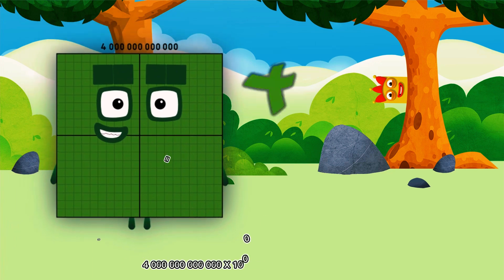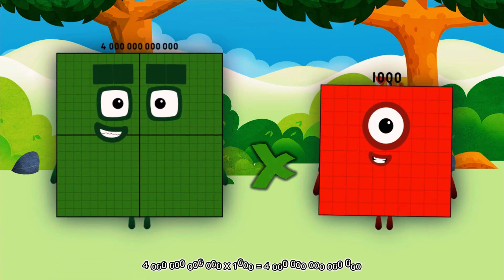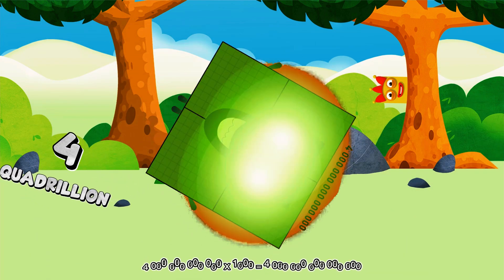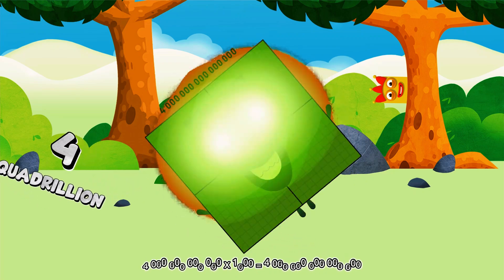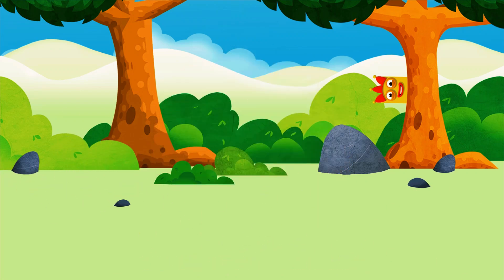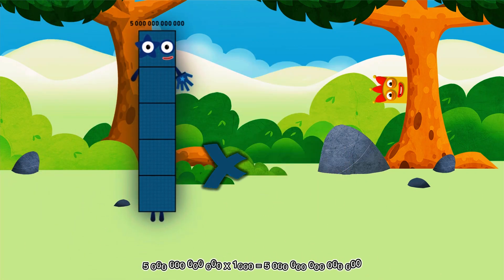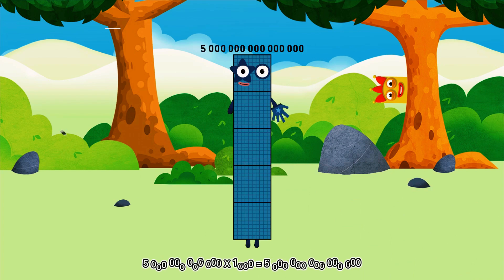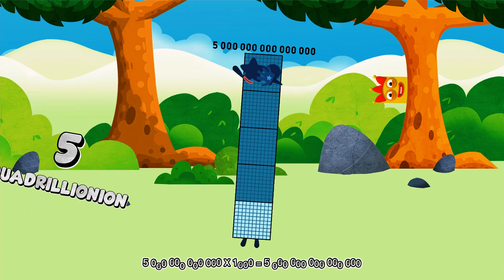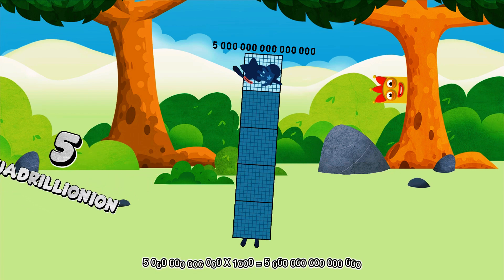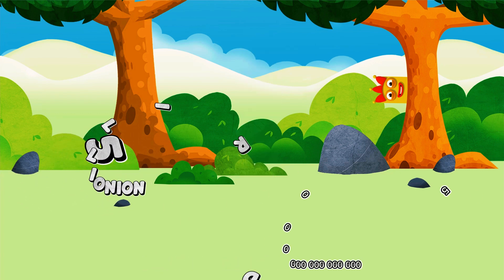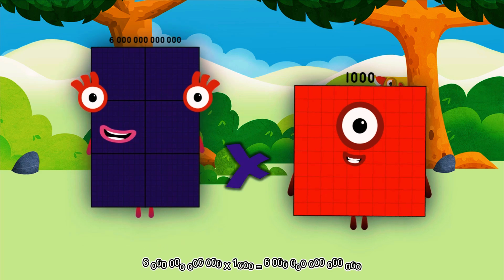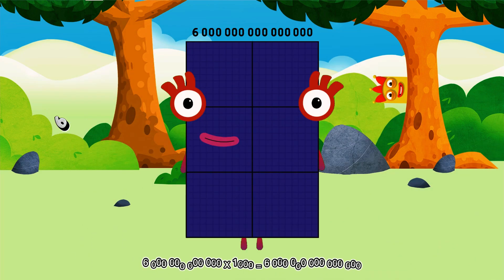4 trillion multiplied by 1,000 equals 4 quadrillion. 5 trillion multiplied by 1,000 equals 5 quadrillion. 6 trillion multiplied by 1,000 equals 6 quadrillion.